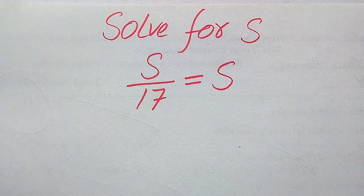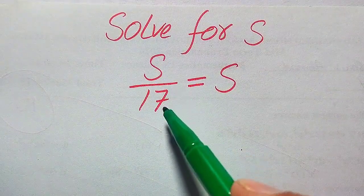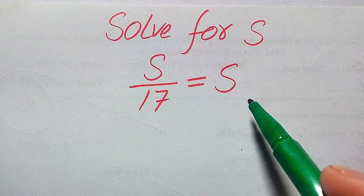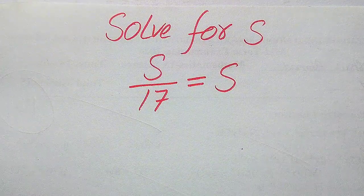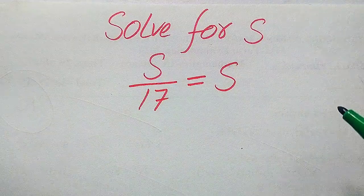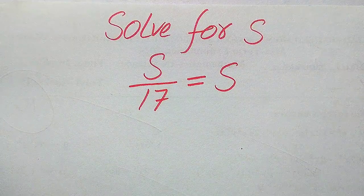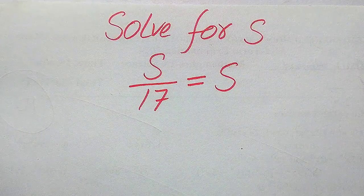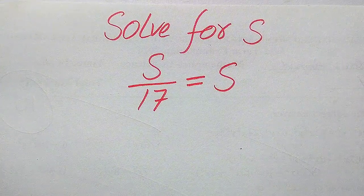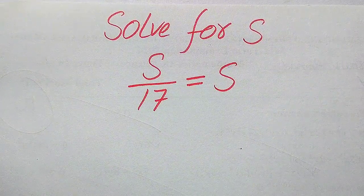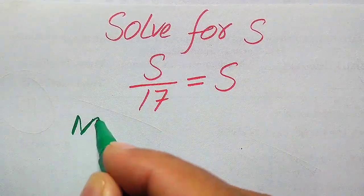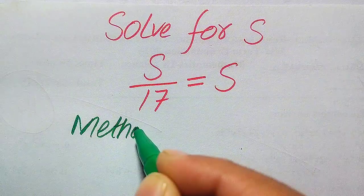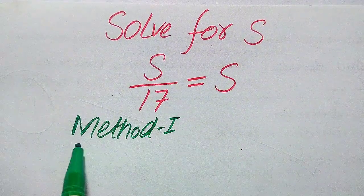Hello everyone. How to solve this problem: for the values of s, if we have s divided by 17 equals √s? We solve this problem for all the values of s. We need to find all the roots of this equation, and at the end we will verify which of the roots are solutions and which are extraneous roots. We will solve this problem using two methods.